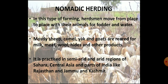The second type of primitive subsistence agriculture is nomadic herding. In this type of farming, herdsmen move from one place to another with their families and livestock in search of pasture, fodder and water. Camels, sheep, yak and goat are the most commonly reared animals by nomads. These animals provide milk, meat, hides, wool and other products to herders and their families. Nomadic herding is practiced in the arid and semi-arid regions of Sahara, Central Asia and some parts of India like Jammu and Kashmir and Rajasthan.